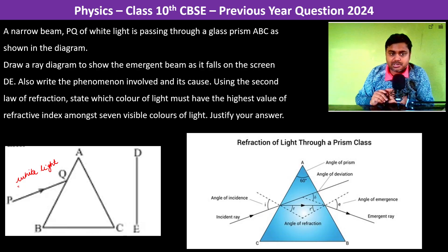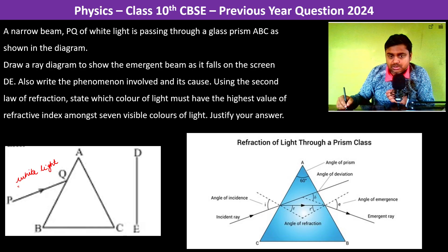Now it passes through a glass prism ABC. Draw a ray diagram to show the emergent beam as it falls on the screen D. So this is the incident ray, this is the angle of incidence.